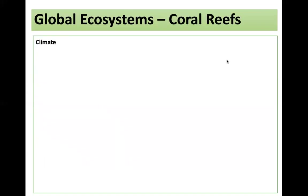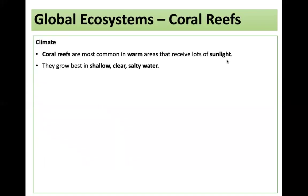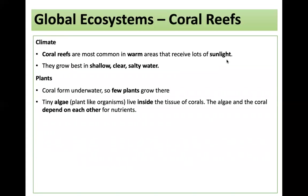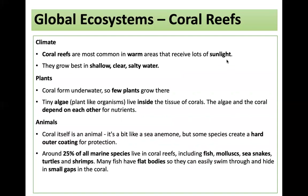Our final biome is coral reefs. They're most common in warm areas that receive lots of sunlight and they grow in shallow, clear, salty water. Few plants grow there — tiny algae, which are plant-like organisms, live inside the tissue of the coral, and the algae and the coral depend on each other for nutrients. The coral itself is an animal, a bit like a sea anemone, but some species create a hard outer coating for protection. Around 25% of all marine species live in coral reefs, including fish, mollusks, sea snakes, turtles and shrimps. Many fish have flat bodies so they can easily swim through and hide in small gaps in the coral.